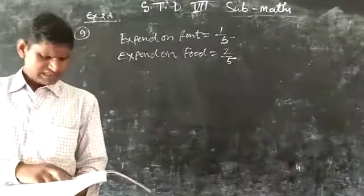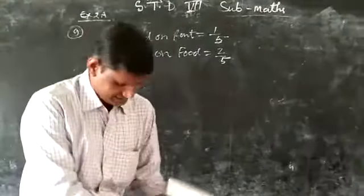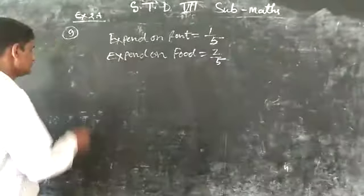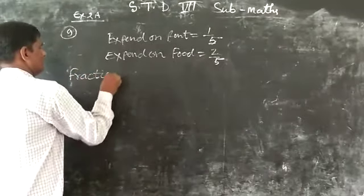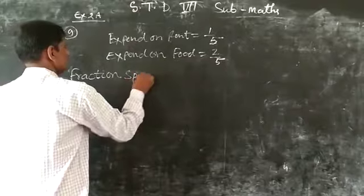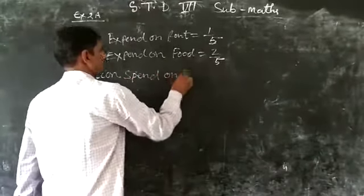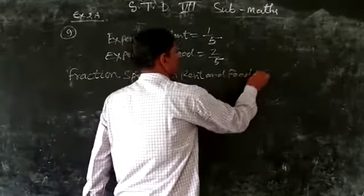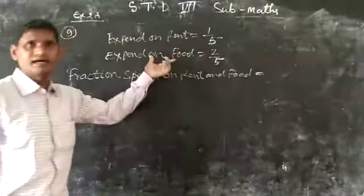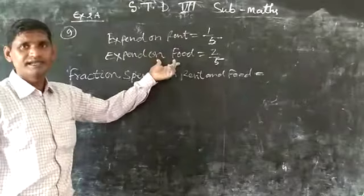Find the fraction of her income spent on rent and food. Fraction spent on rent and food means both together - how much was spent on both. Both means addition.